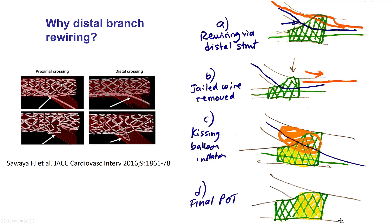The steps are: rewire through the distal strut while the jailed wire remains in place — very useful as a marker of the position of the side branch, and it can favorably modify the angle to facilitate rewiring. Next, remove the jailed guide wire. This step causes a lot of anxiety because sometimes the wire may be hard to come out. The important thing is to not pull hard. If the wire is not coming back easily, the best approach is to stop pulling and advance a small balloon or microcatheter over the jailed wire. Once the microcatheter or balloon comes all the way in, pulling gently is usually enough to bring the wire out.